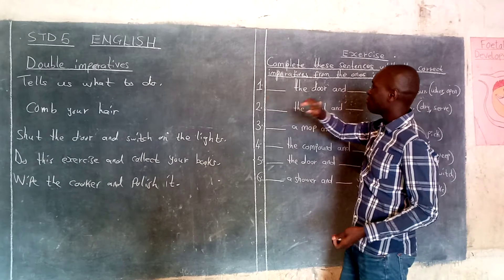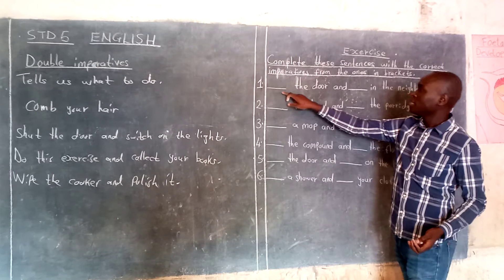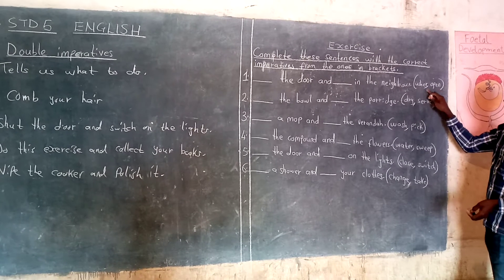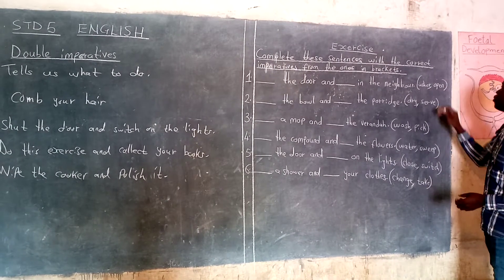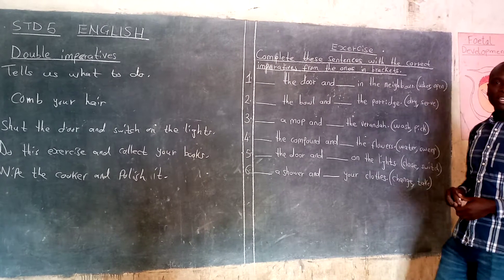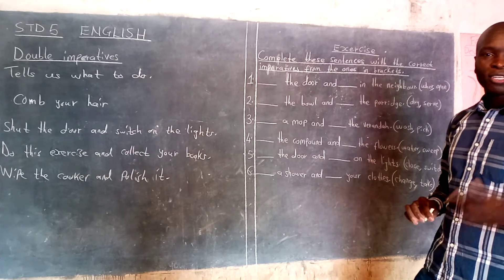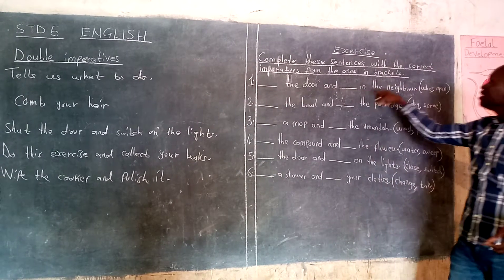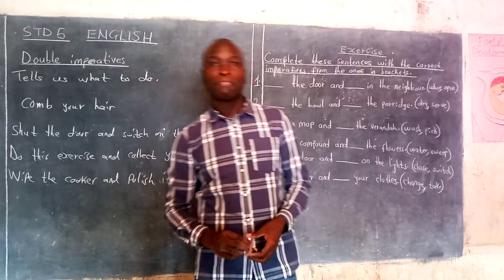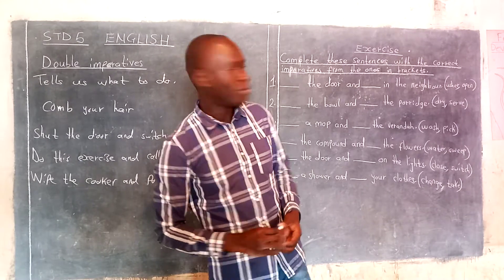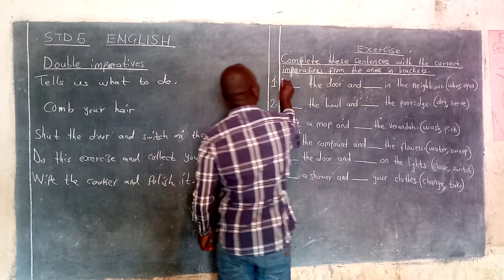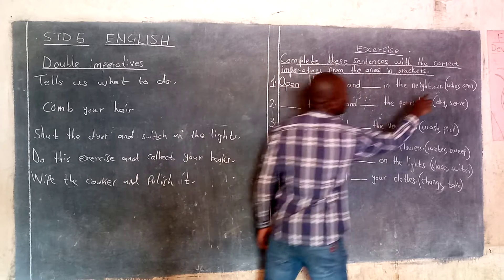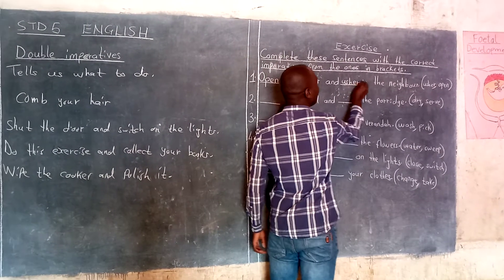Let's look at the first example. It says: 'dash the door and dash in the neighbor.' In brackets we have 'usher' and 'open.' Where should we put usher and where should we put open to come up with a double imperative? It's supposed to be 'Open the door and usher in the neighbor.' Remember, our sentence must begin with a capital letter, so 'Open' must be a capital. Open the door and usher in the neighbor.